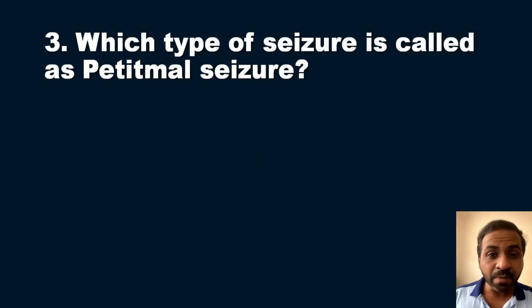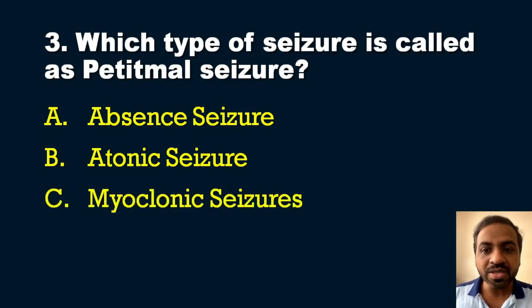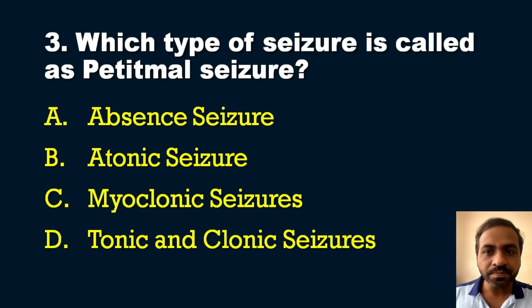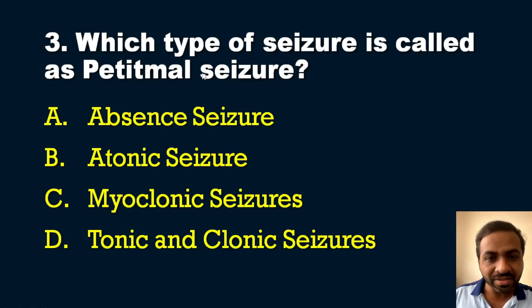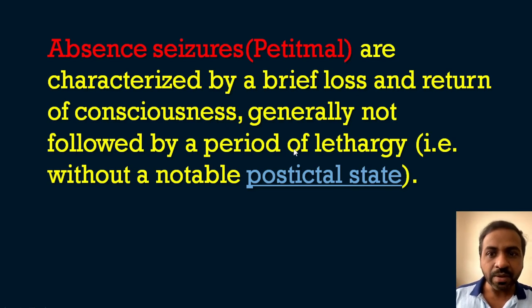The third question: which type of seizure is called petit mal seizure? The options are: A) Absence seizure, B) Atonic seizure, C) Myoclonic seizure, D) Tonic and clonic seizure — all are types of generalized seizures. The answer is option A — absence seizures are otherwise known as petit mal seizures. They are characterized by a brief loss and return of consciousness, generally not followed by a period of lethargy, meaning there is no notable post-ictal state.